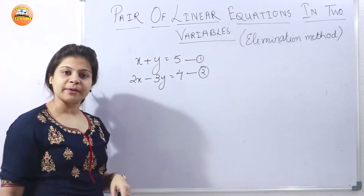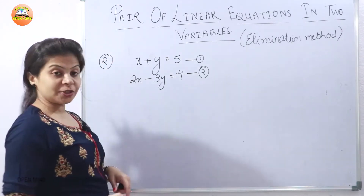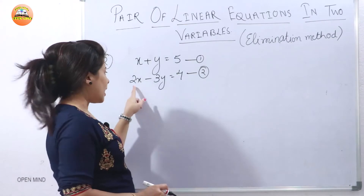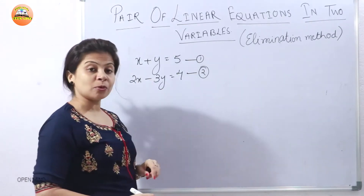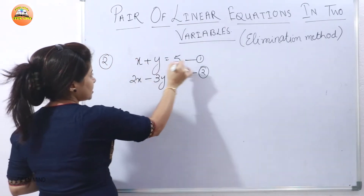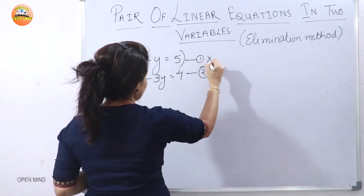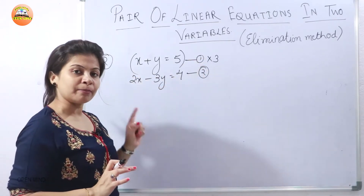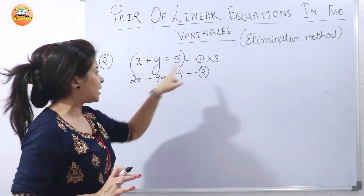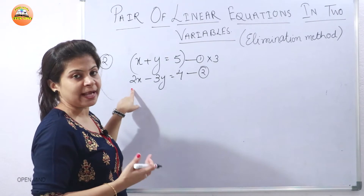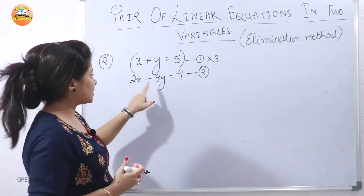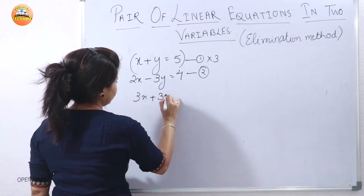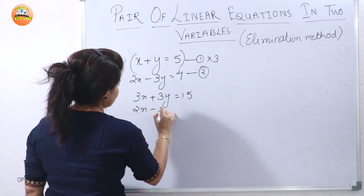Now we will see another question using the same elimination method. The first equation is x plus y equals 5, and the second equation is 2x minus 3y equals 4. In the previous question I eliminated x; here I will make the coefficient of y the same so you can understand both concepts. The coefficient of y in equation 2 is 3, so I multiply the first equation by 3, giving 3x plus 3y equals 15. The second equation remains 2x minus 3y equals 4.